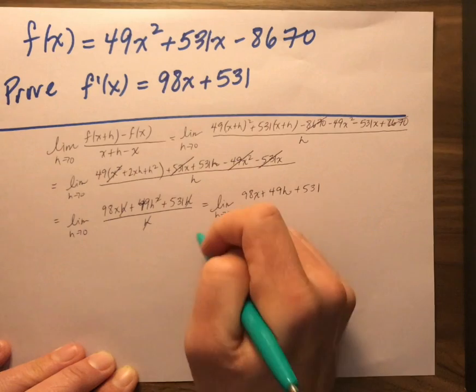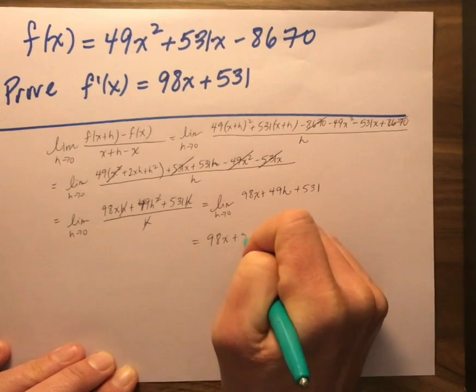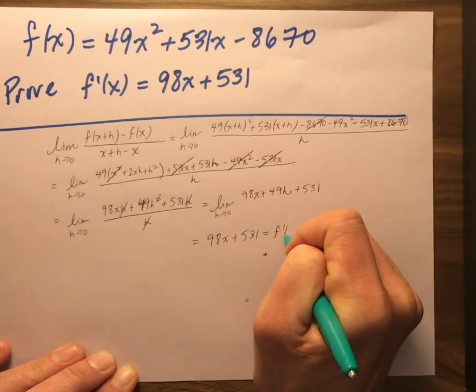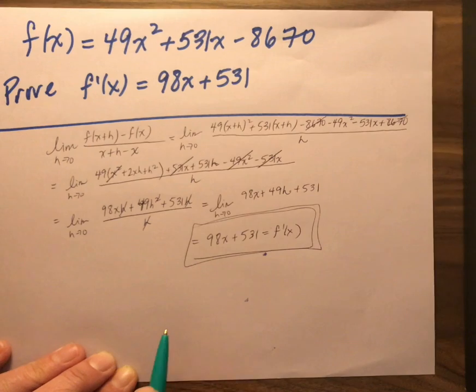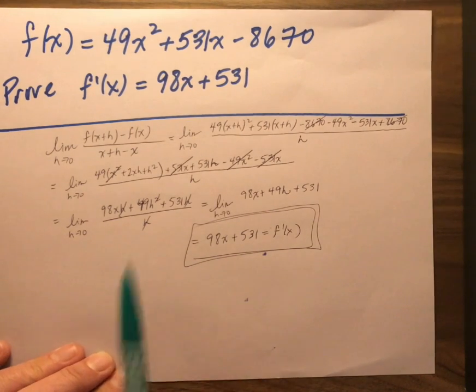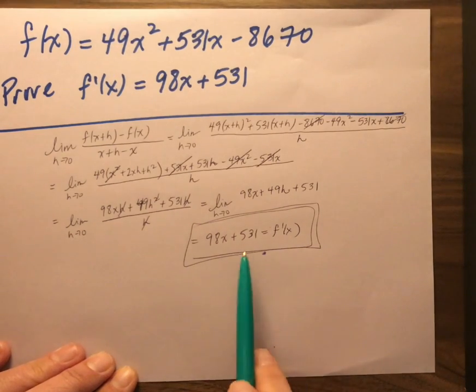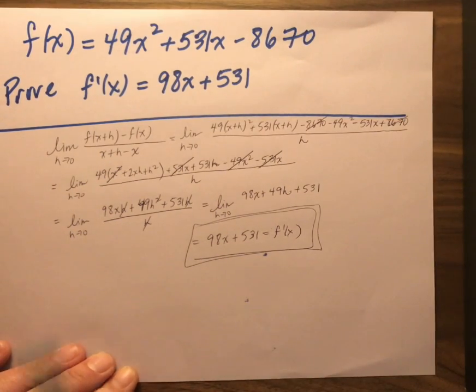I am left with 98x plus 531. And that is my rate of change of the function f of x at any point. So if I want to know how anything is changing at x equals 0, 1, 92, negative 35, I can plug that into the derivative and it will give me the instantaneous rate of change at that specific value on the function f of x.